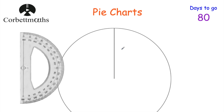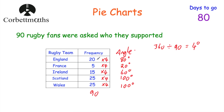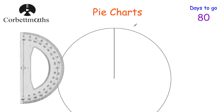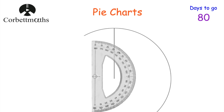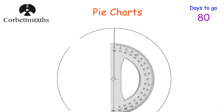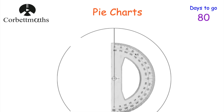Now we just need to draw the pie chart. Here we've got our circle and our line. Typically when you're doing a GCSE question you've been asked to draw a pie chart, the circle is usually drawn for you. We're going to start with England, which is 80 degrees. We get our protractor, put the cross on the center of the pie chart, line up the zero with the line on the paper, and then find 80 degrees going around the outside.